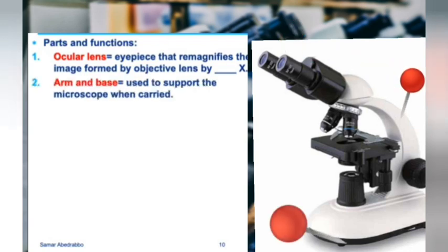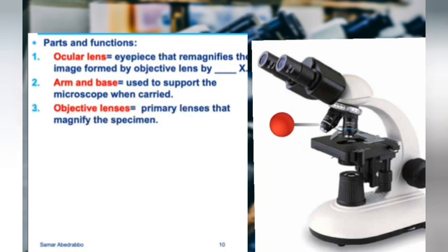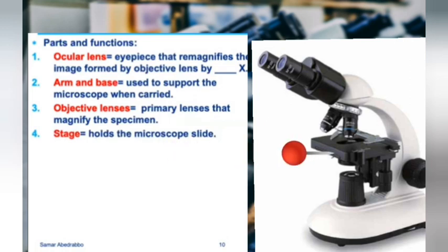The arm is this part of the microscope, and the bottom is the base. This is how you carry the microscope — you hold it by the arm and put your hand under the base. The objective lenses are the lenses here that you use. On the light microscope there are four objective lenses with different magnifications.